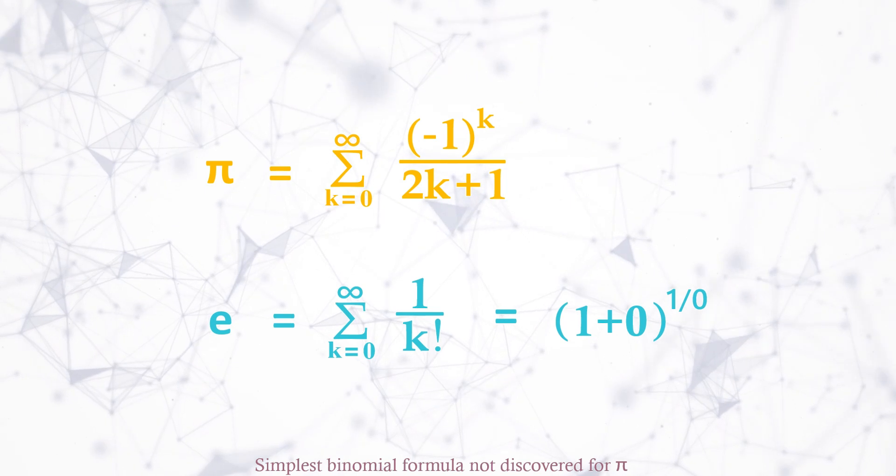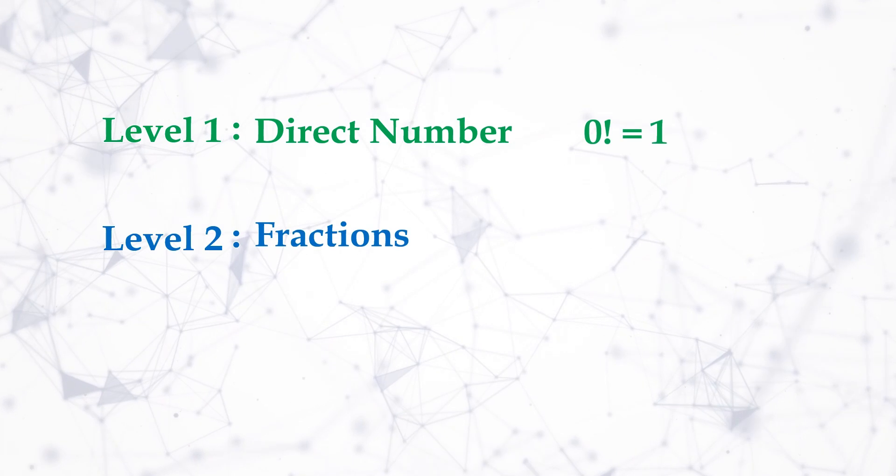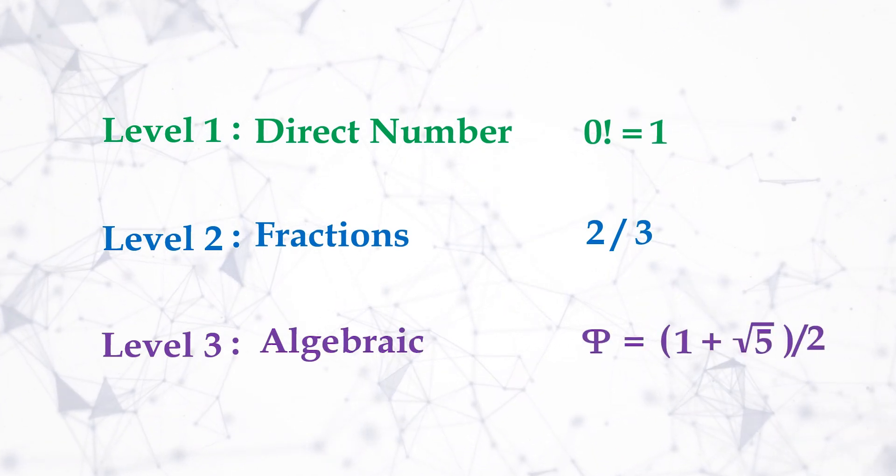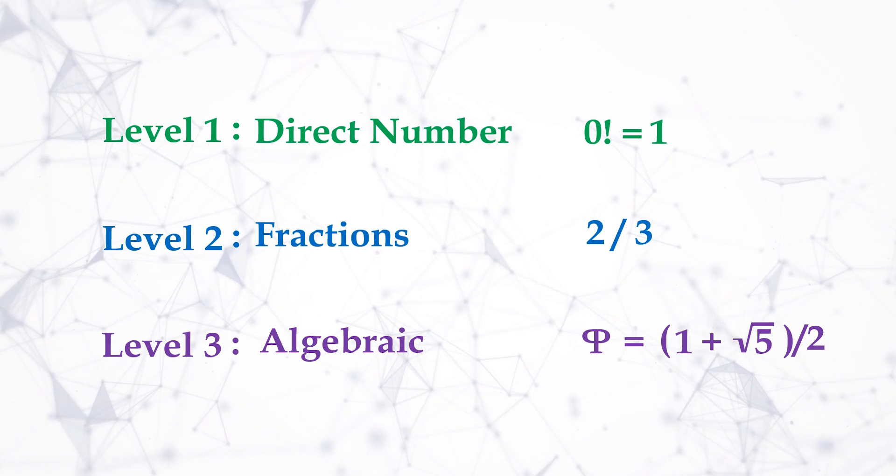Transcendental numbers means it cannot be expressed in simple forms such as direct numbers or fractions or algebraic formula such as golden ratio. It's a super advanced formula than these forms.